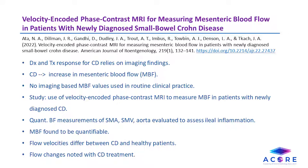Mesenteric blood flow was found to be quantifiable using these MRI acquisition methods. These flow velocities were also found to differ significantly between patients with ileal Crohn's and healthy patients. Dynamic flow changes were noted in patients with ileal Crohn's disease in response to medical therapy. Although this study was small in sample size, it does demonstrate that velocity-encoded phase contrast MR may have a future role in diagnosis and treatment monitoring for Crohn's disease.